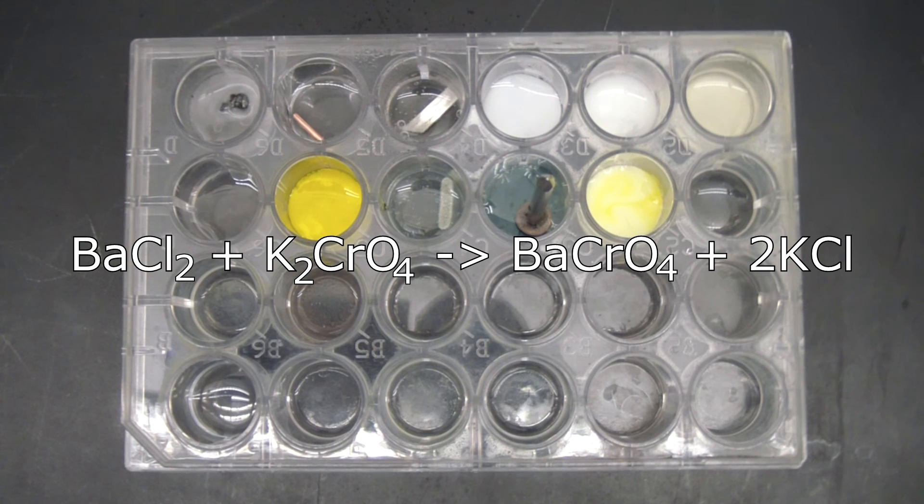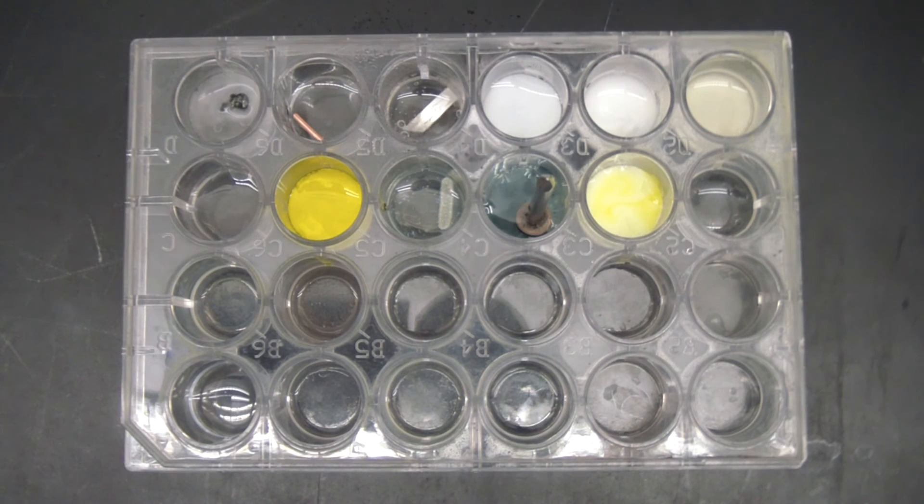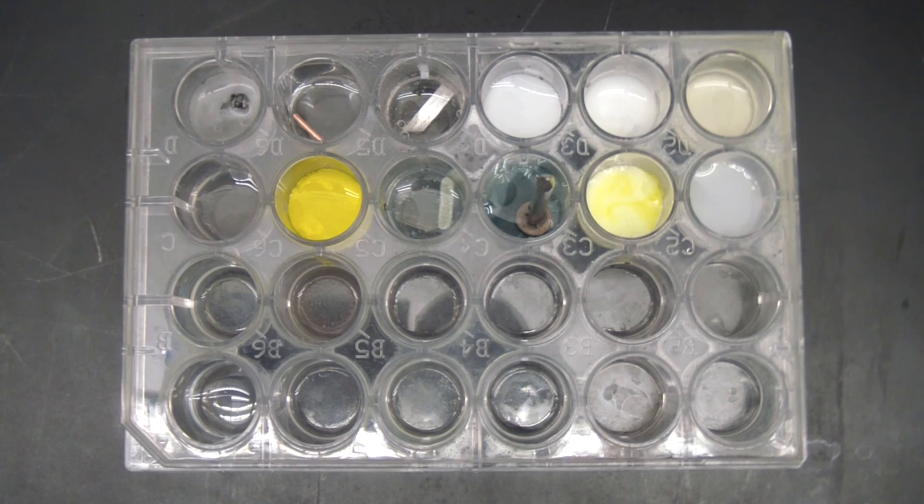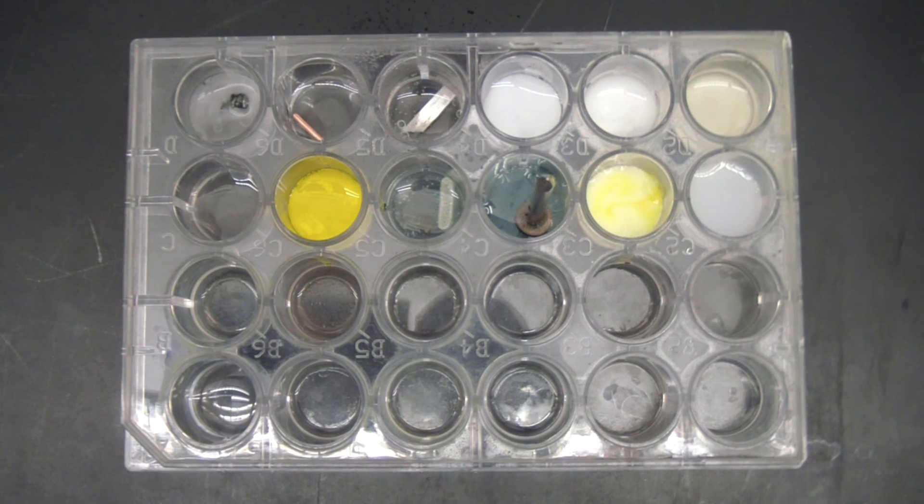And then last but not least, barium chloride once again. This time, I'm going to add ammonium carbonate to it. All right, and you can see there we get a white precipitate, which follows this particular equation.